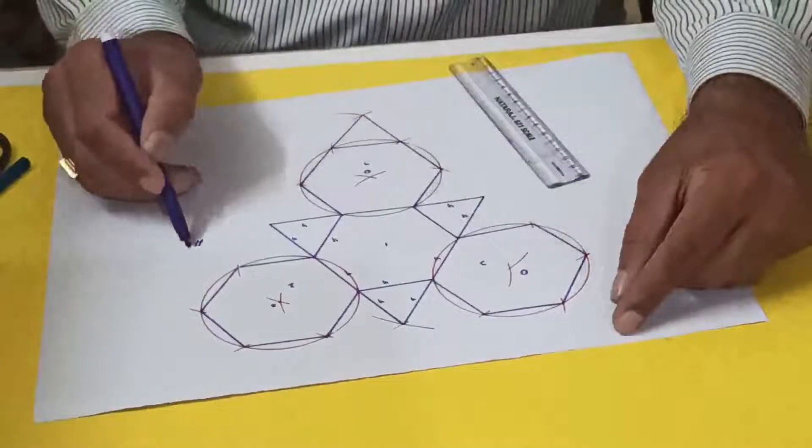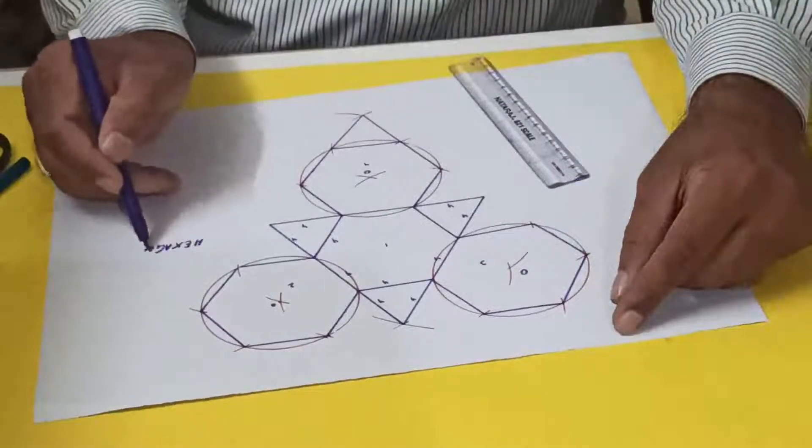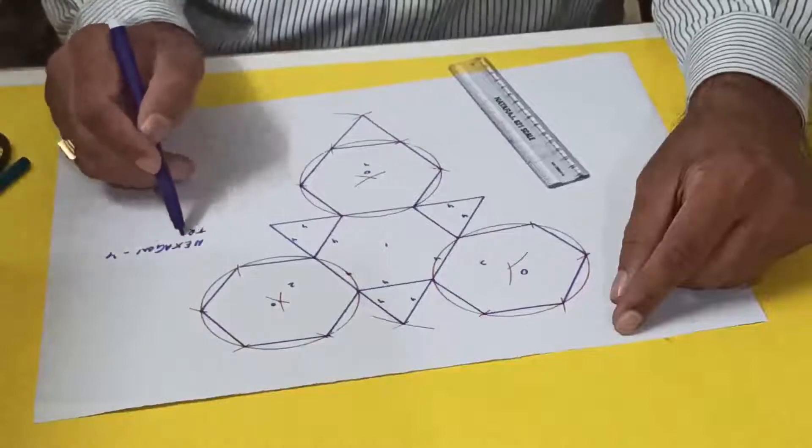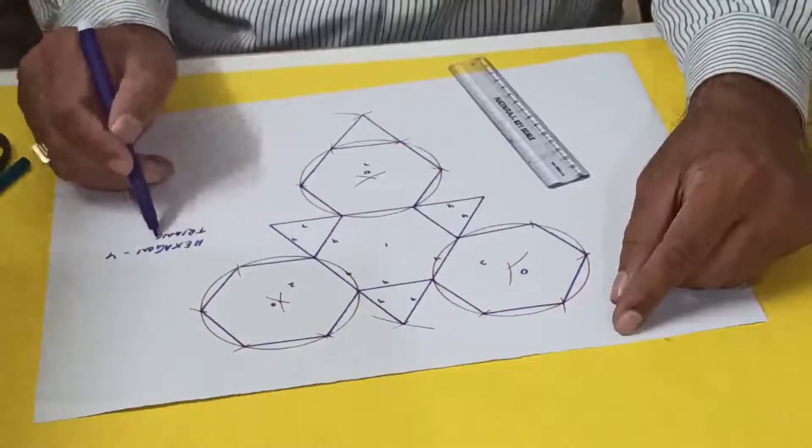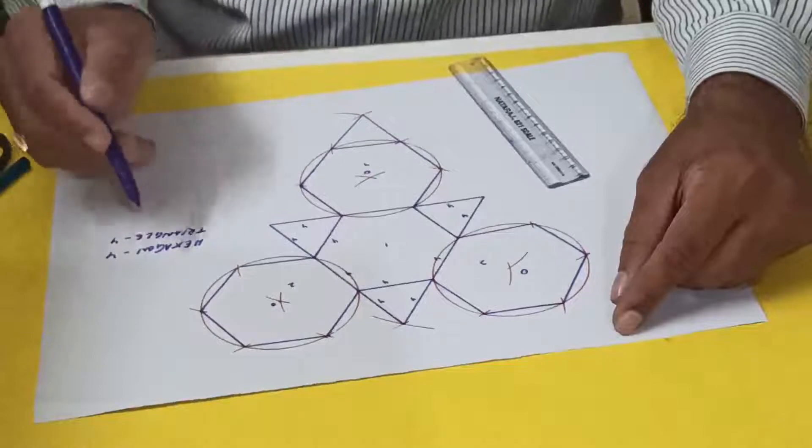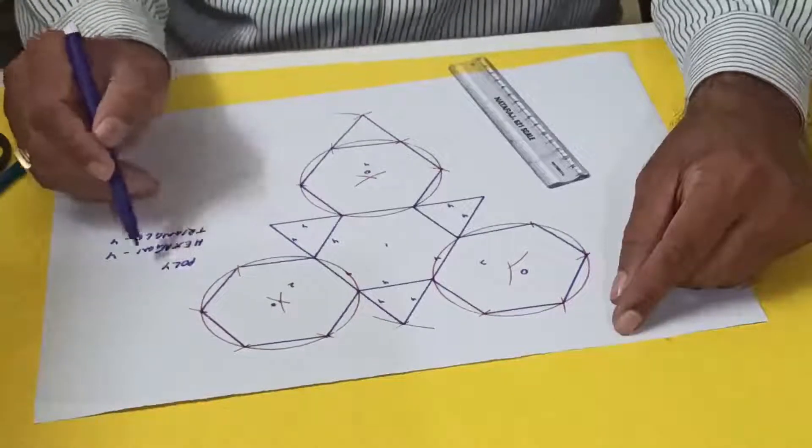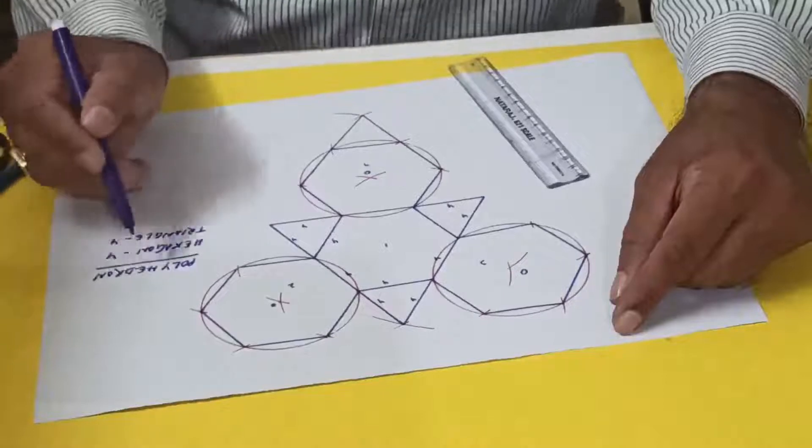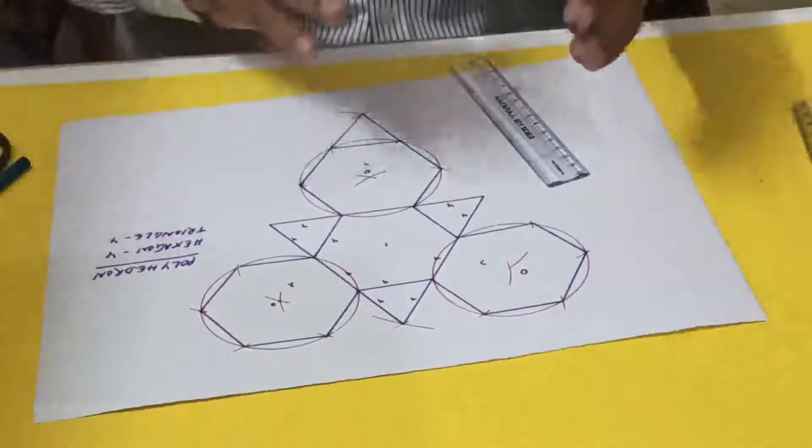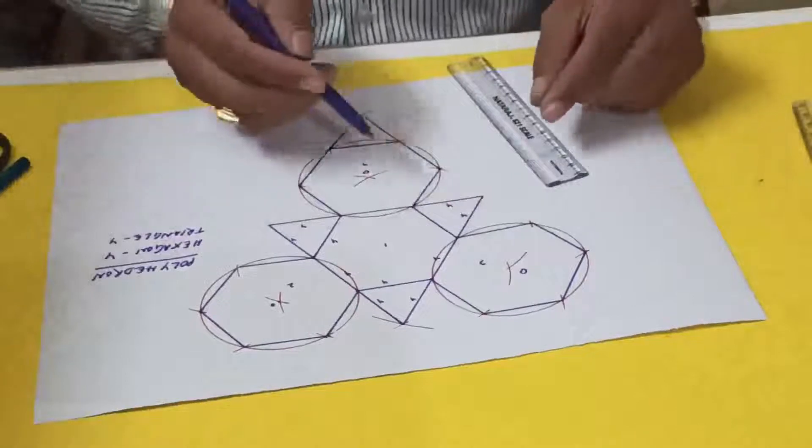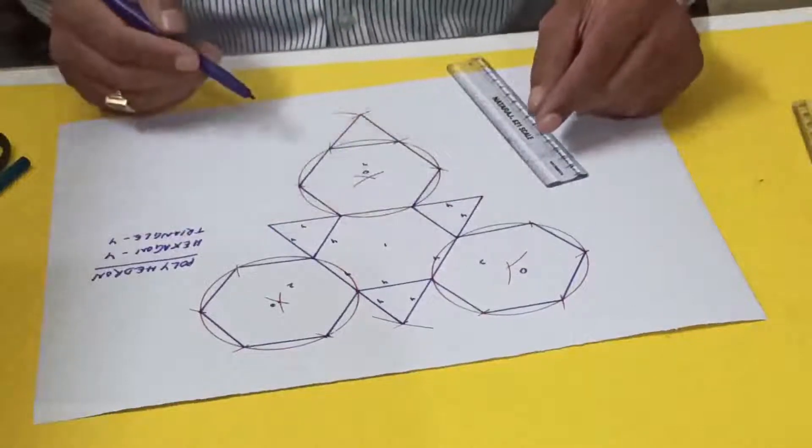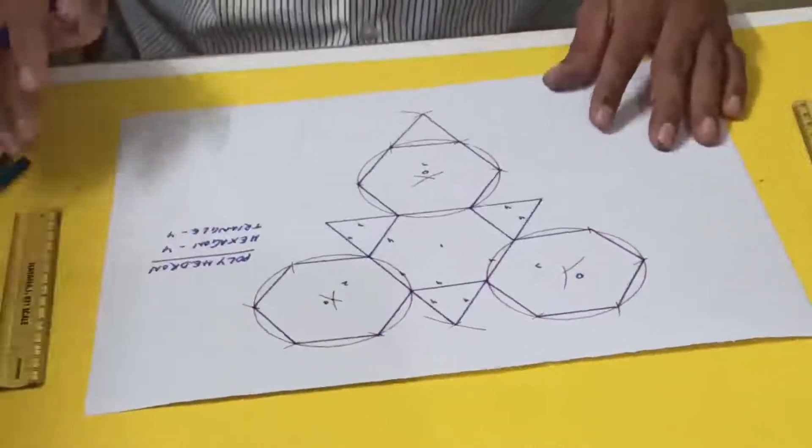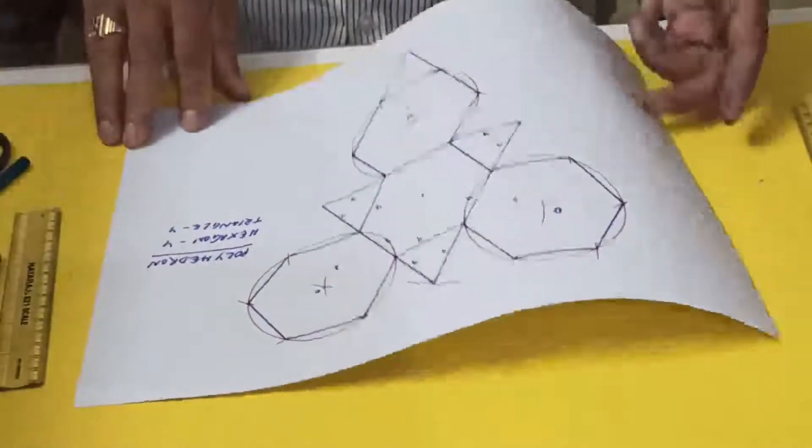And by doing this one, this is having hexagon four numbers and triangle four. This is a polyhedron having four hexagons and four triangles. So let us see. We can leave the space. This one now I will cut the figure.